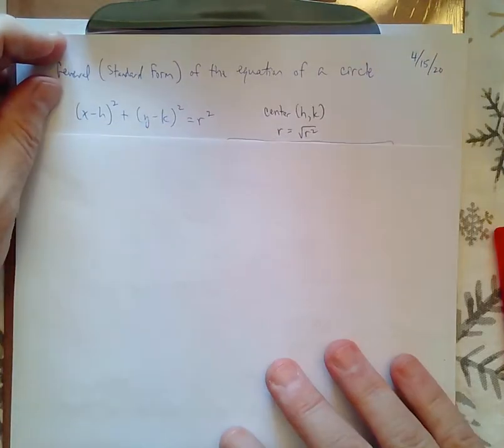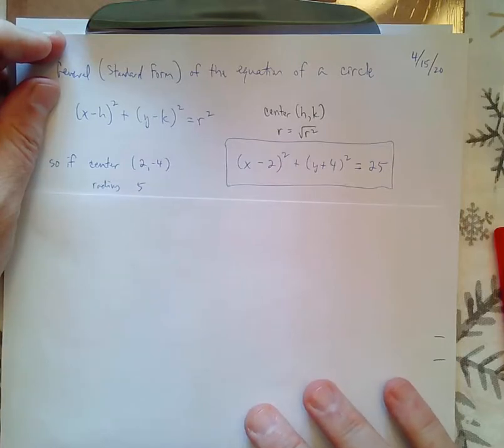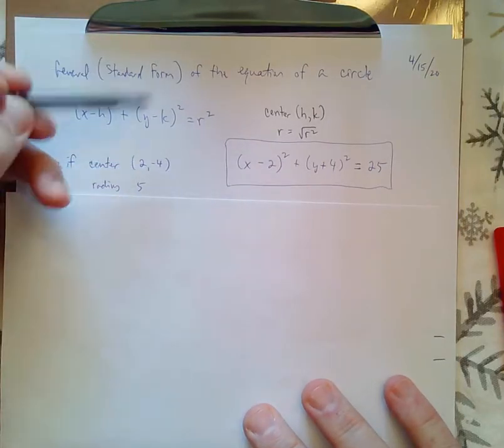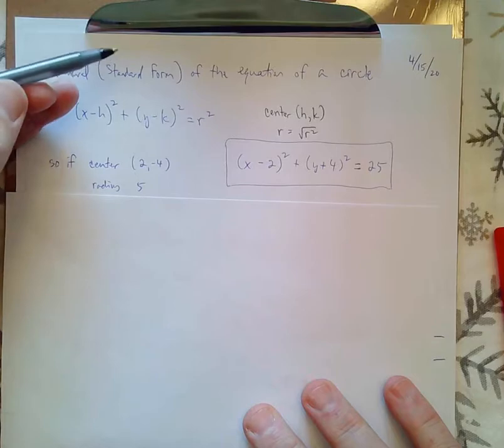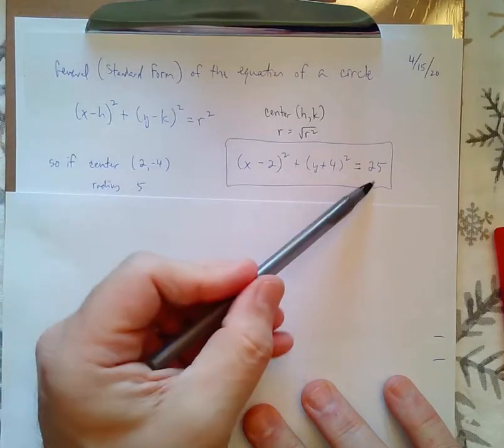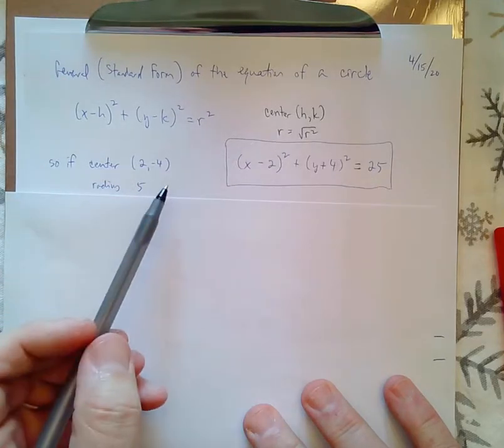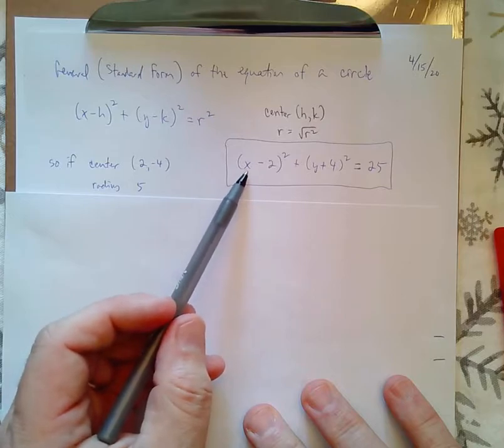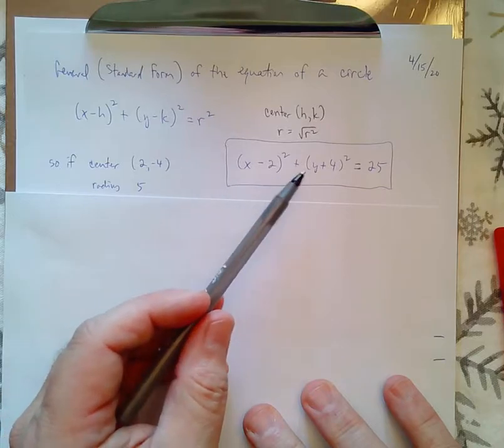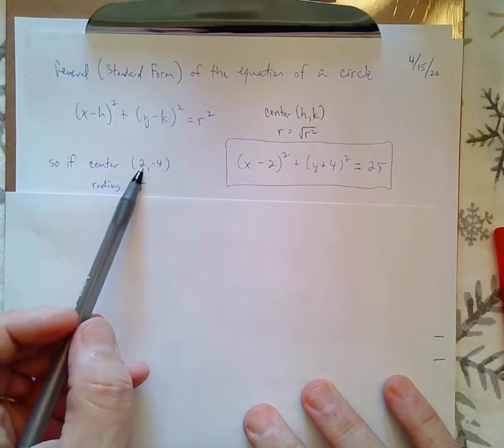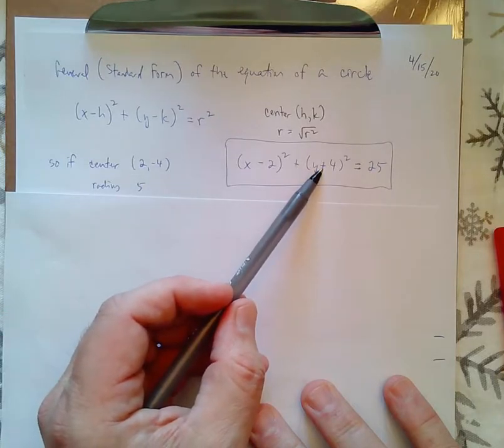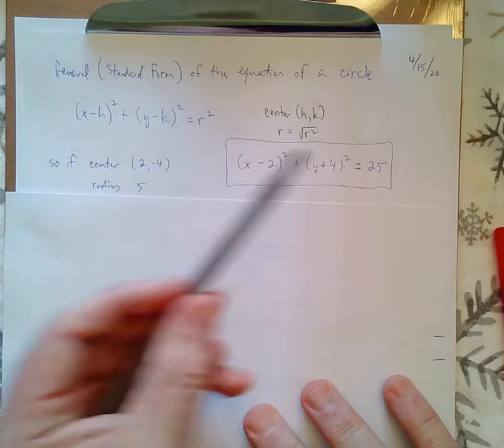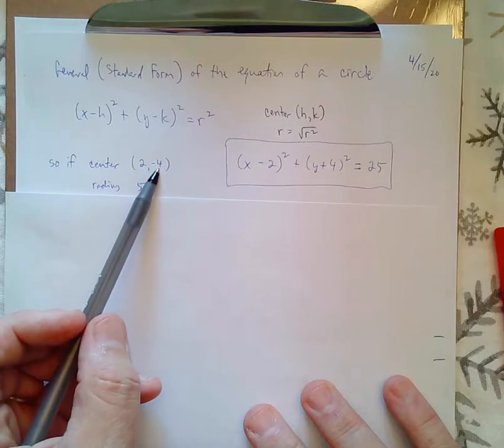So, if I look at this example, if I have a circle with center (2, -4) and a radius of 5, I know that 5 squared is 25, and I know that the formula inside would be (x - 2) squared, because 2 is a positive number, and (y + 4) squared, because -4 is the y-coordinate.